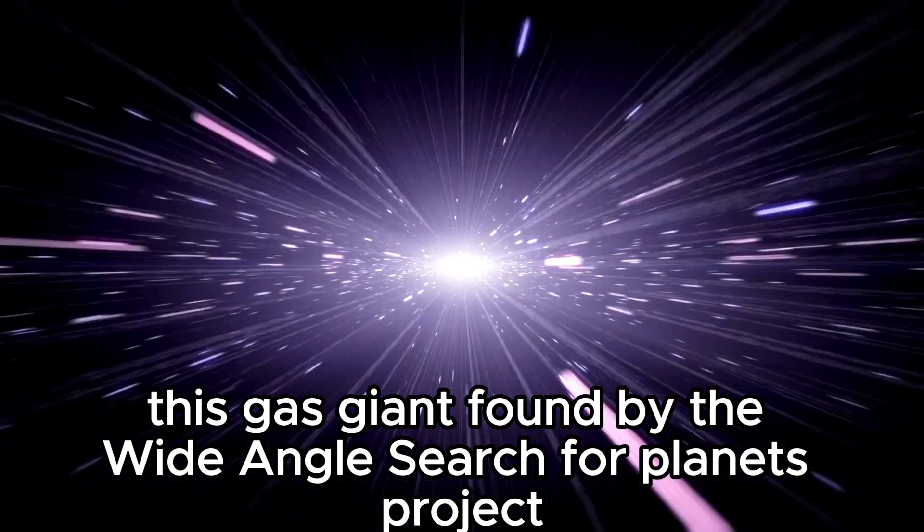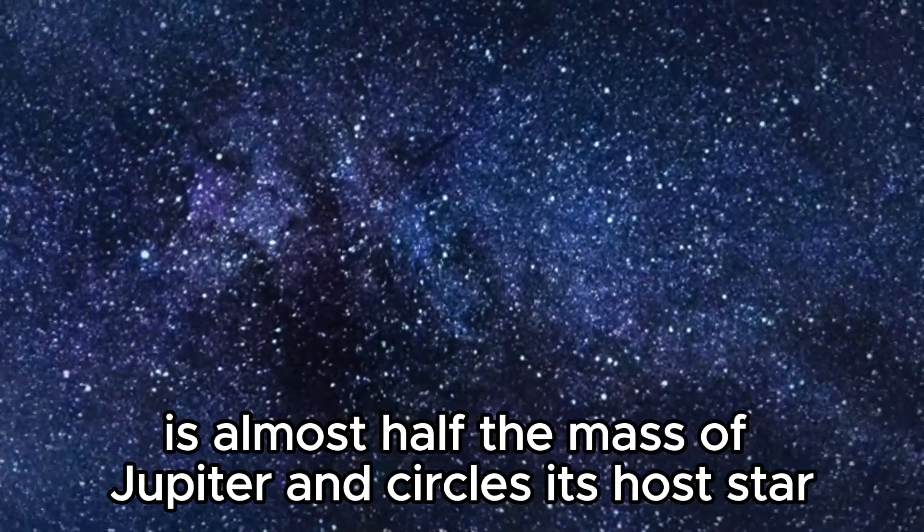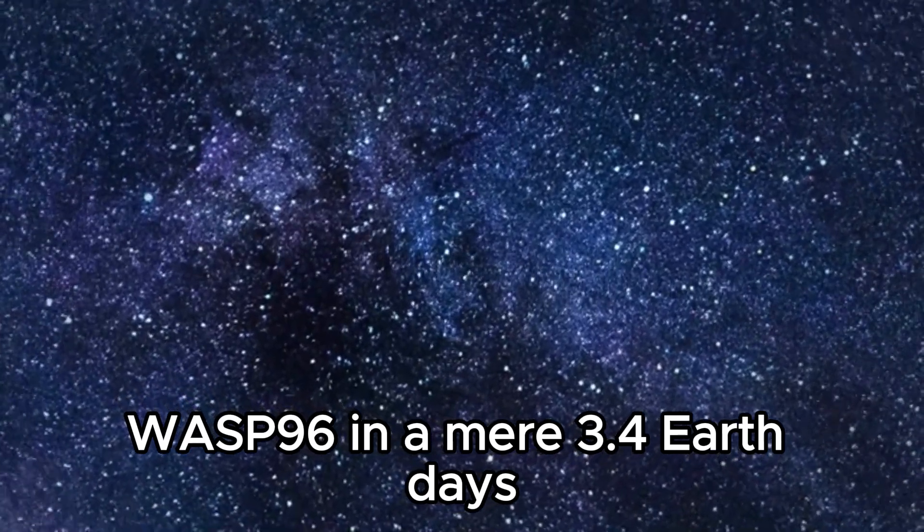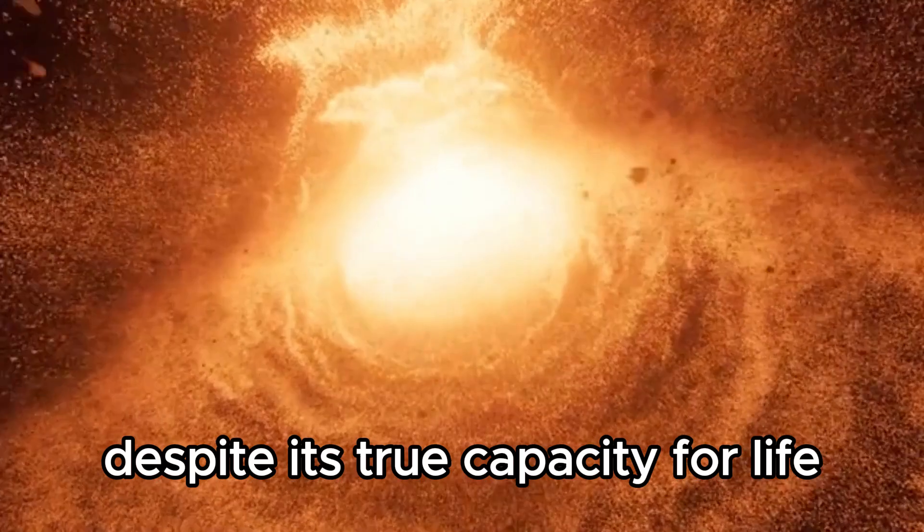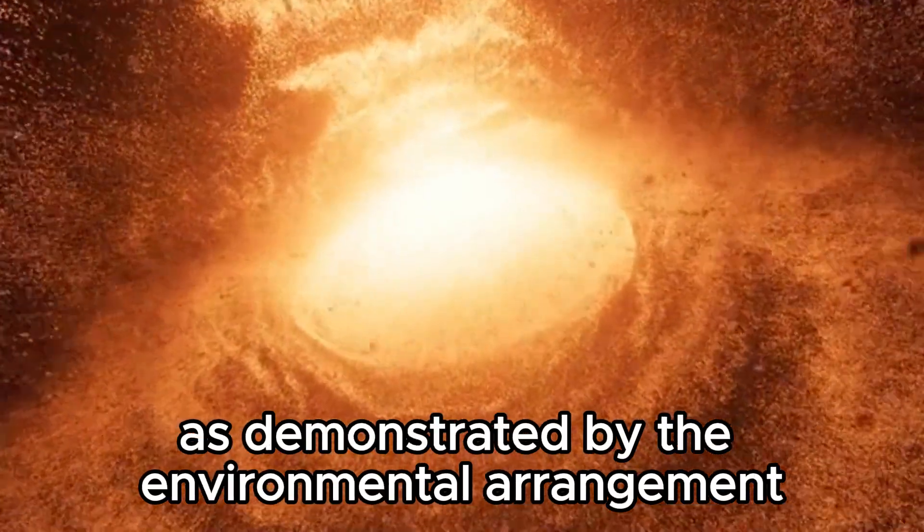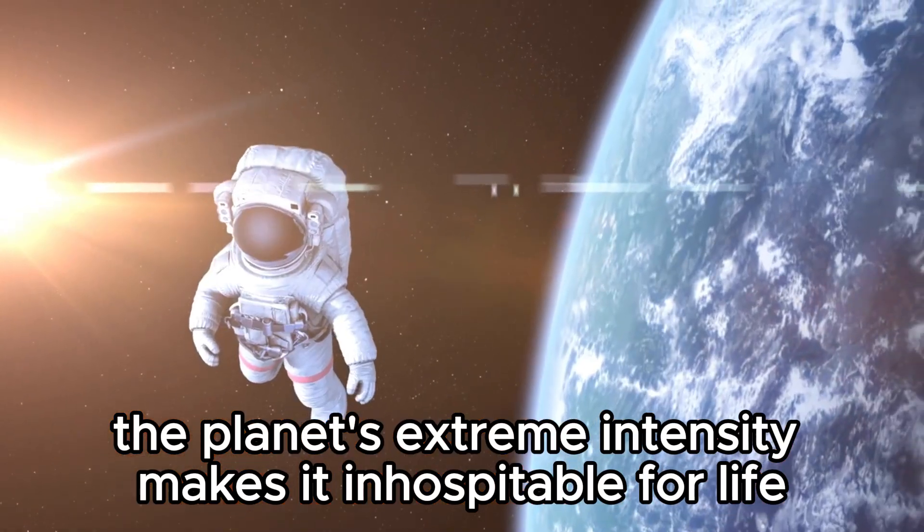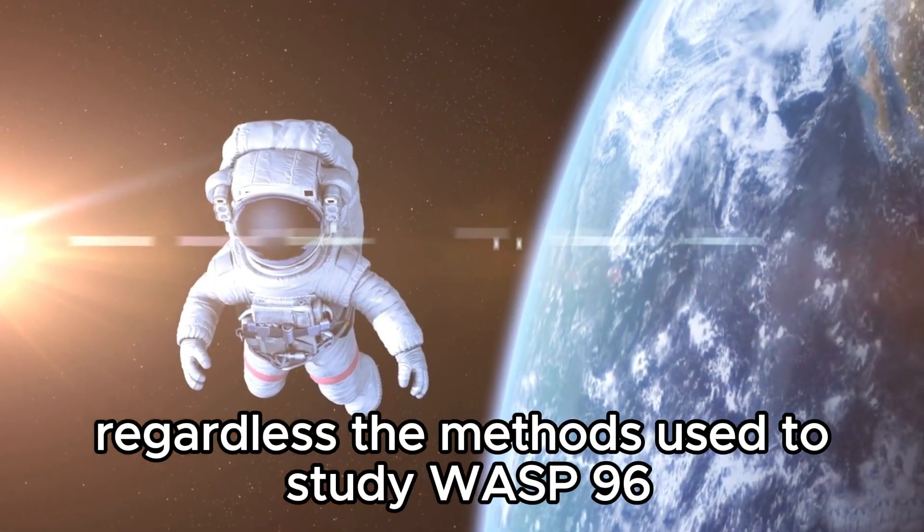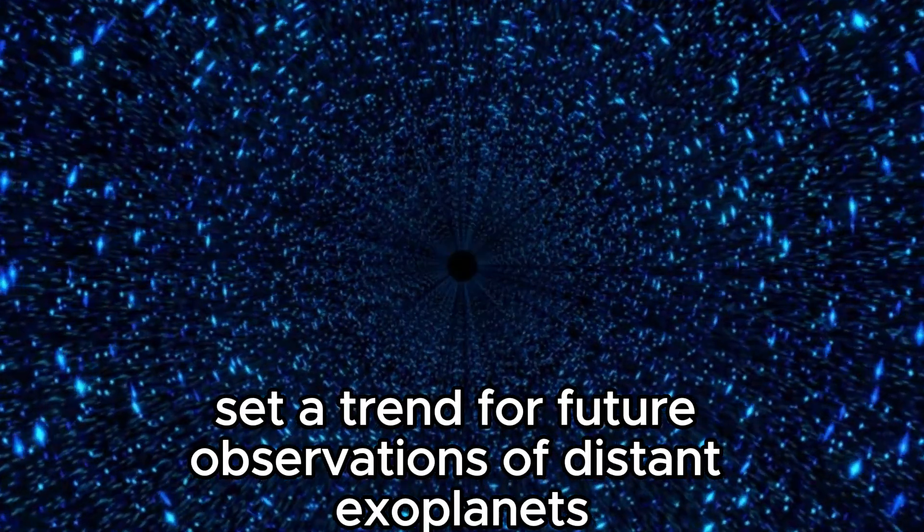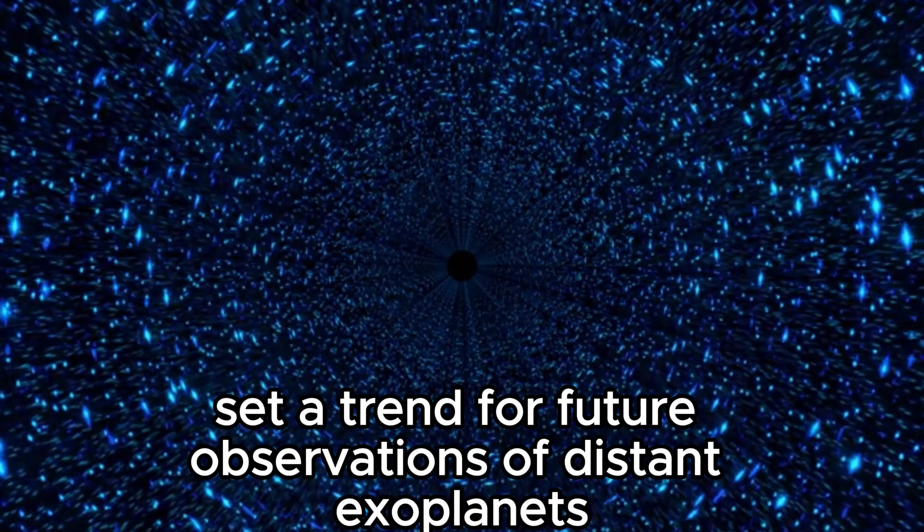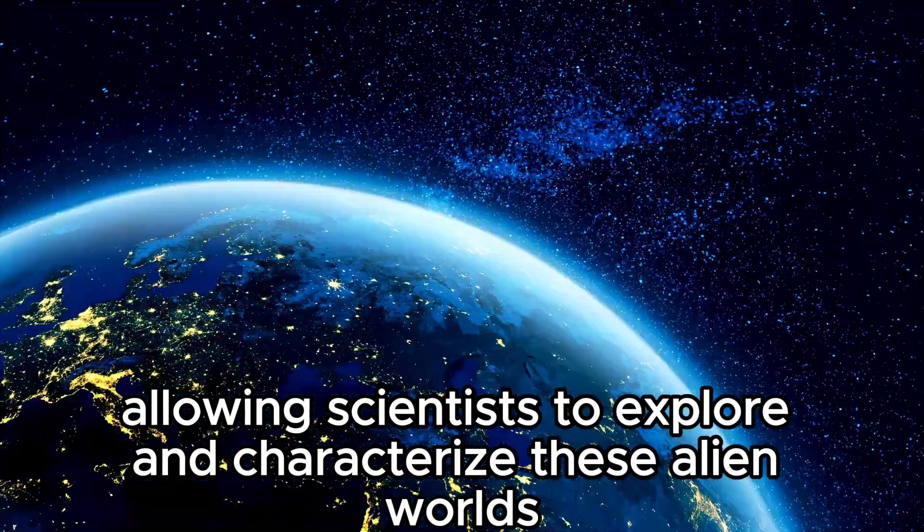Let's dive into what we know about WASP-96b. This gas giant found by the Wide Angle Search for Planets project is almost half the mass of Jupiter and orbits its host star WASP-96 in a mere 3.4 Earth days. Despite its true capacity for life as demonstrated by the environmental arrangement, the planet's extreme heat makes it inhospitable for life. Regardless, the methods used to study WASP-96b's environment set a trend for future observations of distant exoplanets, allowing scientists to explore and characterize these alien worlds.